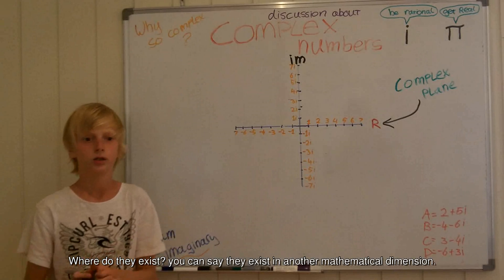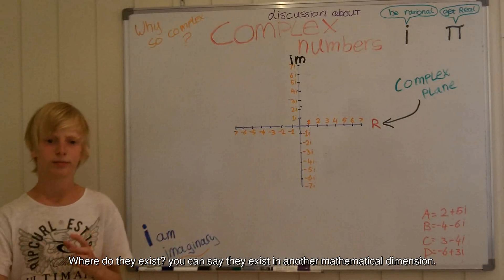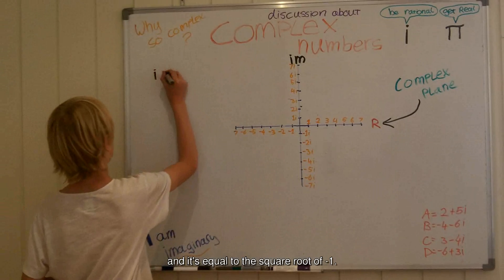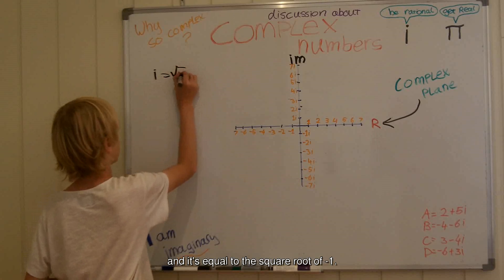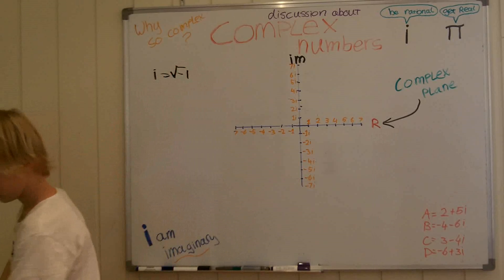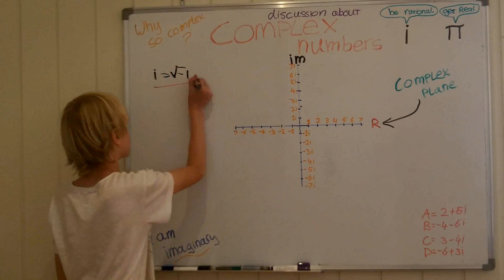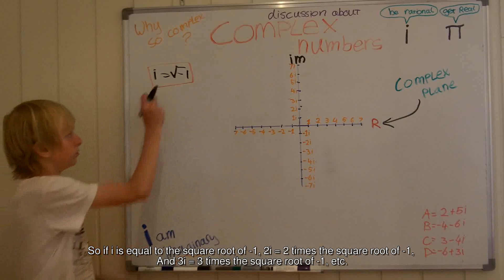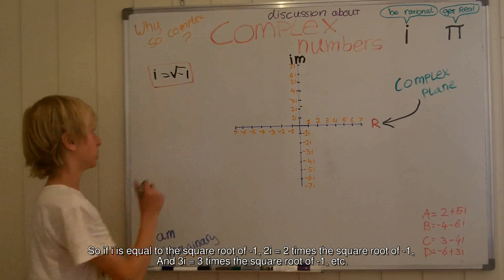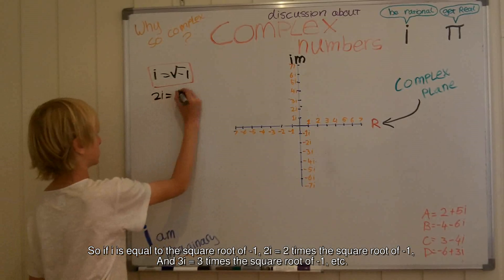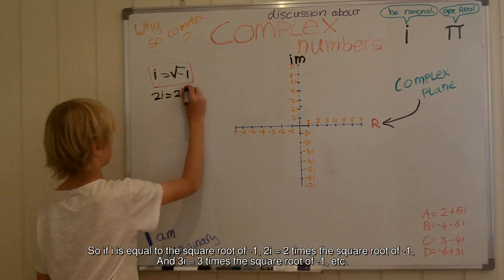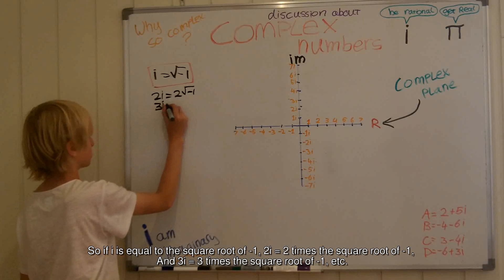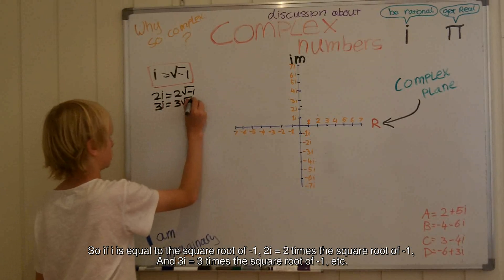Why do they exist? You can say they exist in another mathematical dimension. An imaginary number is called i, and it's equal to the square root of minus 1. So if i is equal to the square root of minus 1, then 2i is equal to 2 times the square root of minus 1, and 3i is equal to 3 times the square root of minus 1.